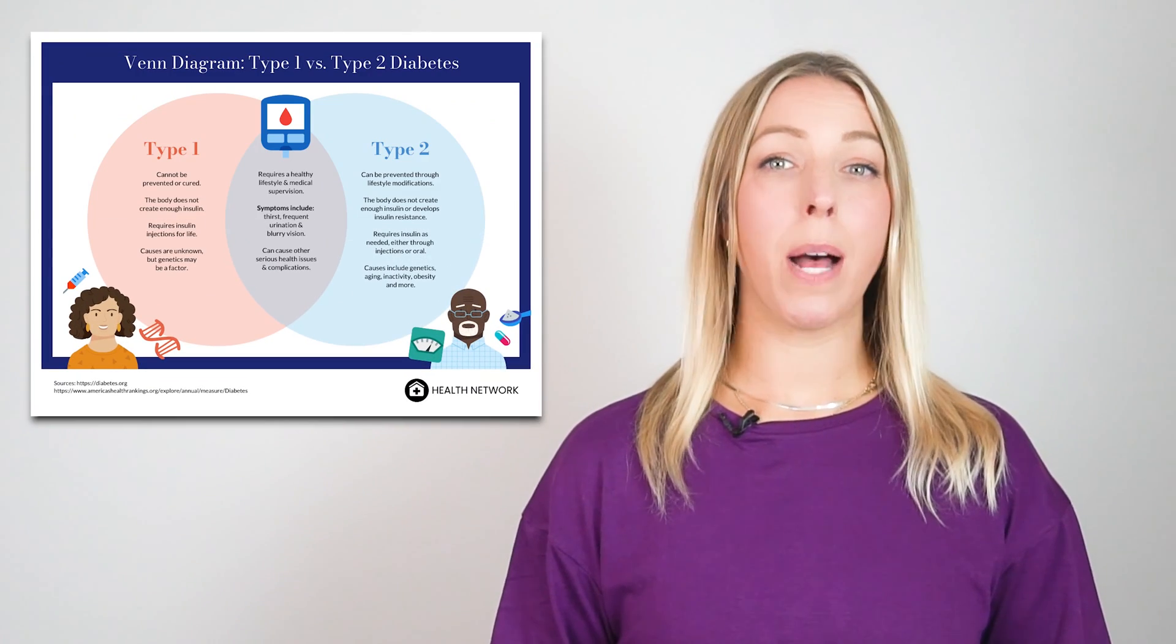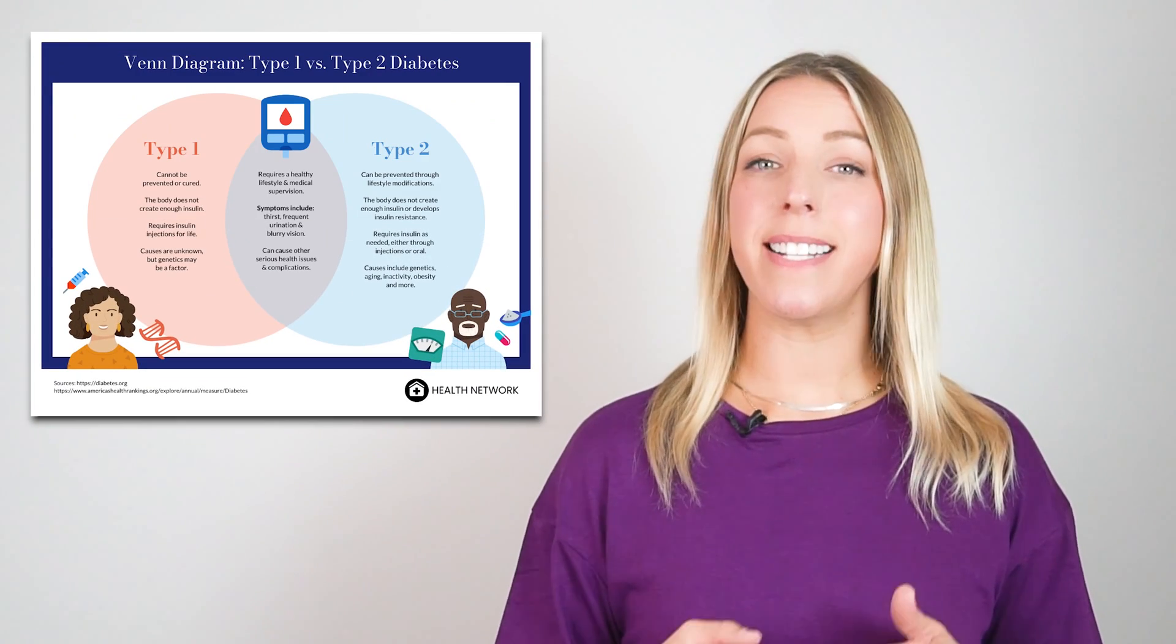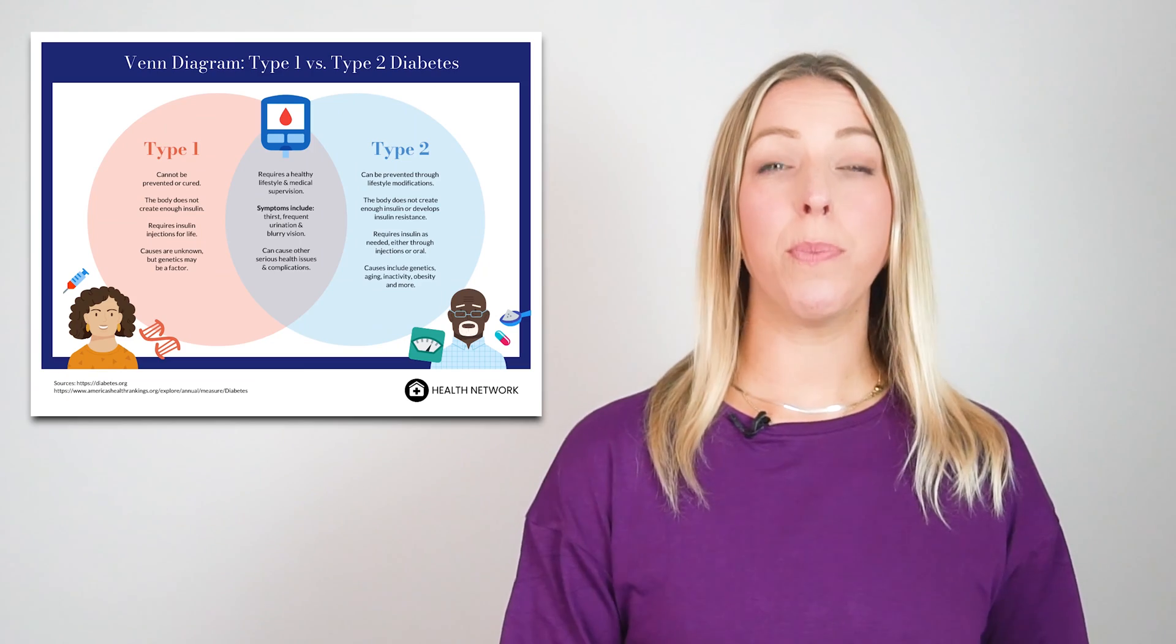And for showcasing overlaps, nothing beats a classic Venn diagram. These diagrams prove helpful in comparing the similarities and differences between two or more entities.